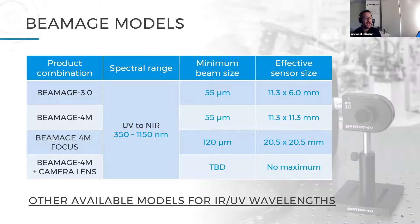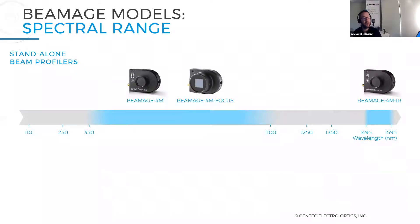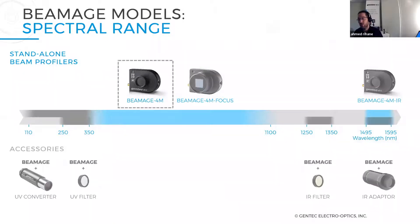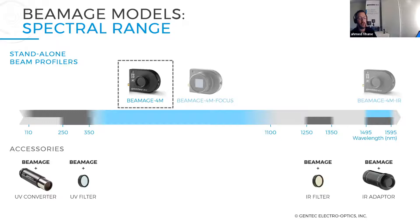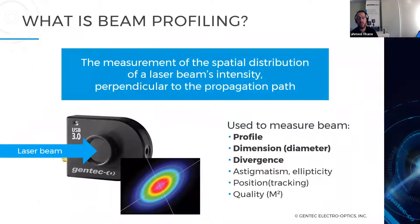Speaking of requirements, we have different camera models with different effective sensor sizes covering a range of wavelengths from 110 nm to 1595 nm. For example, with the Beam H4M — the camera we will demo a little later — we have different accessories that allow customers to go from UV wavelengths up to IR, including a UV converter and an IR adapter.